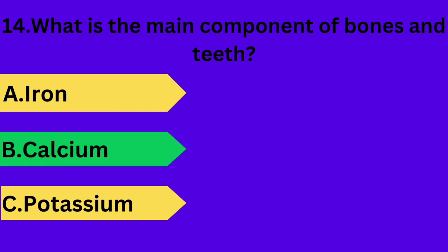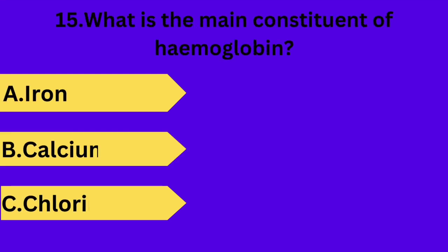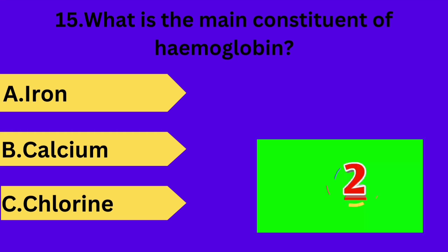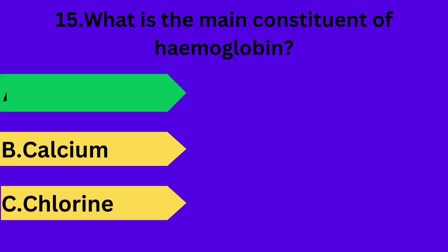And next question is: what is the main component of hemoglobin? Option A: iron. Option B: calcium. Option C: chlorine. Your time starts now. Answer is option A: iron.